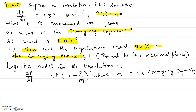The logistic model for the population is dp/dt equal to k times p times 1 minus p over m, where m is the carrying capacity. We want to write the given equation in this form: k times p times 1 minus p over m.